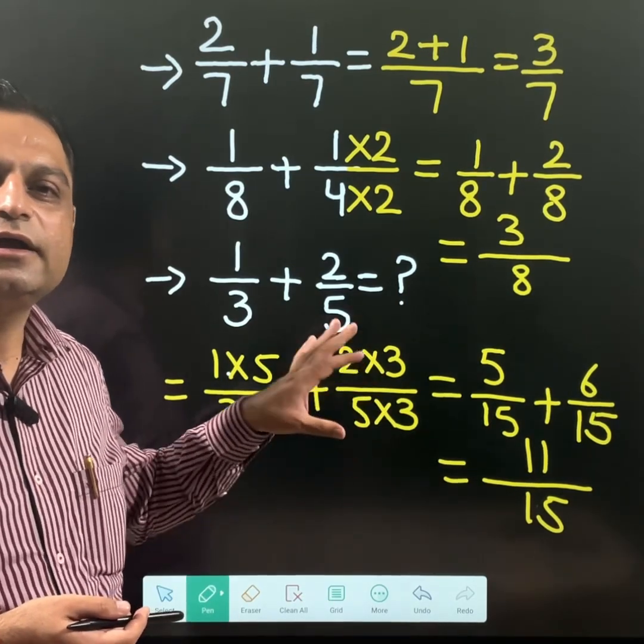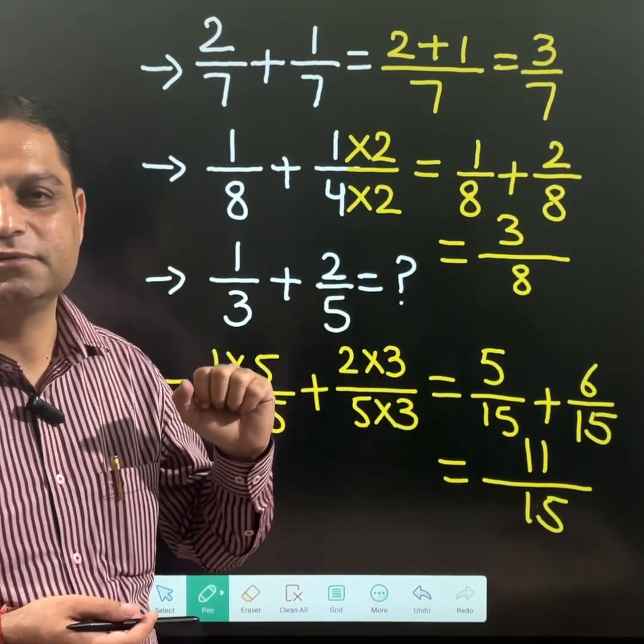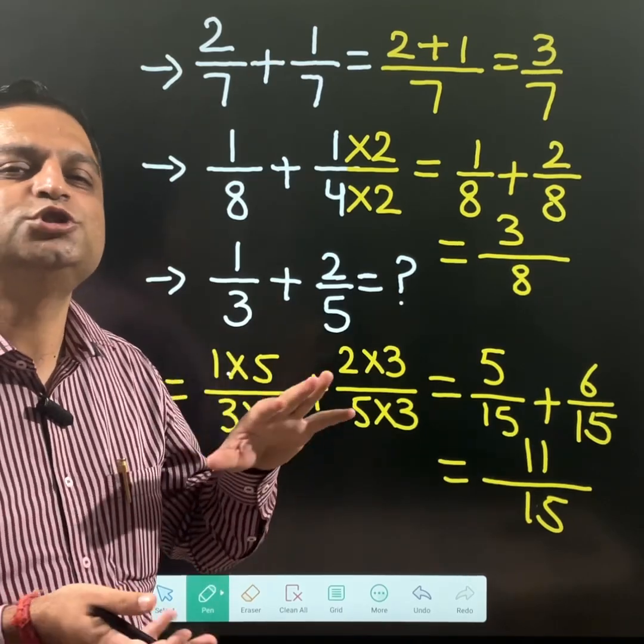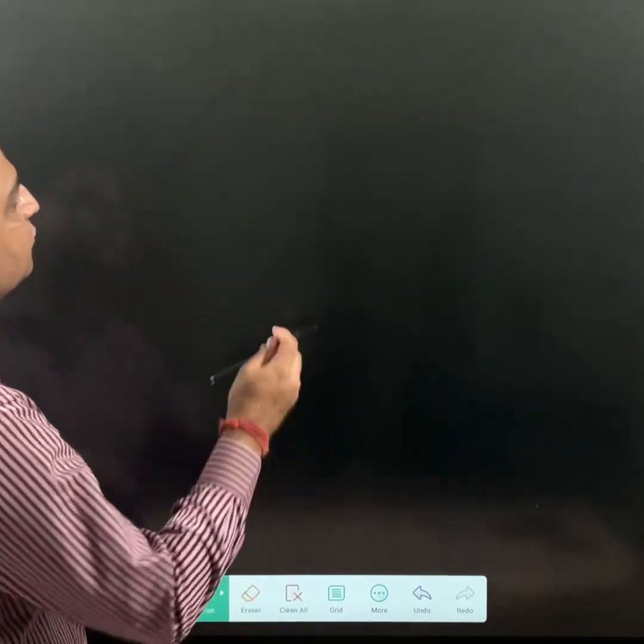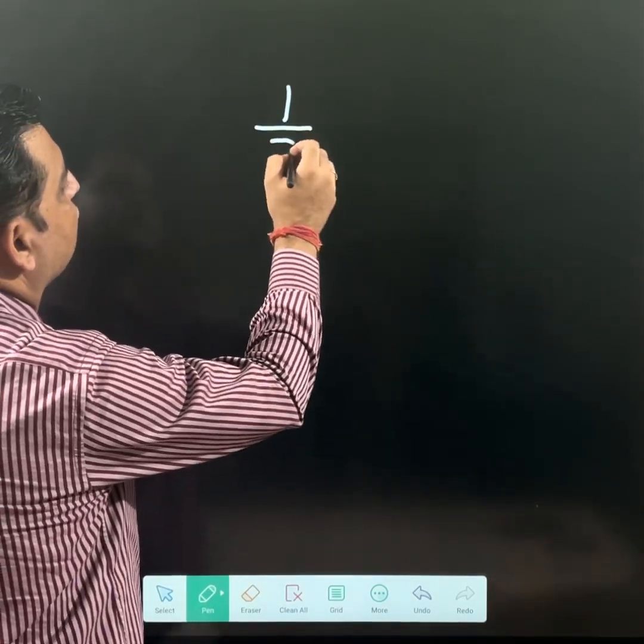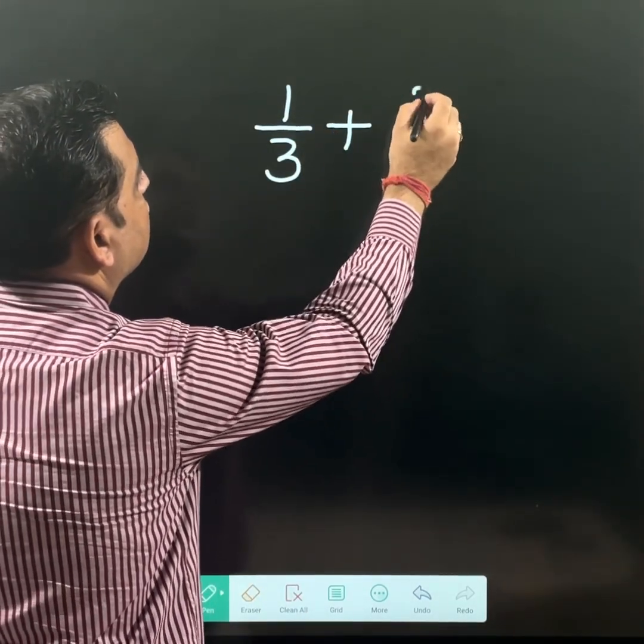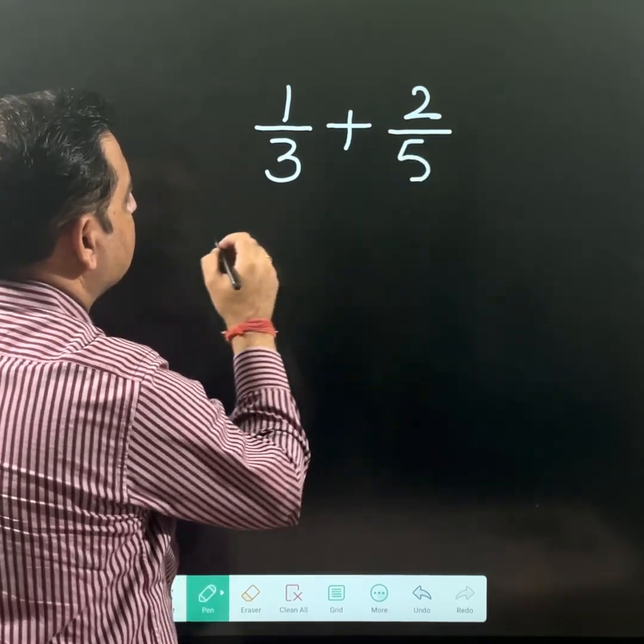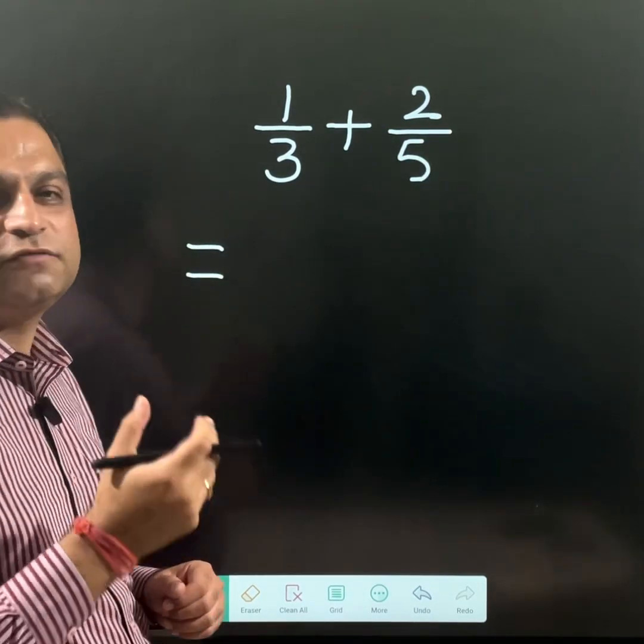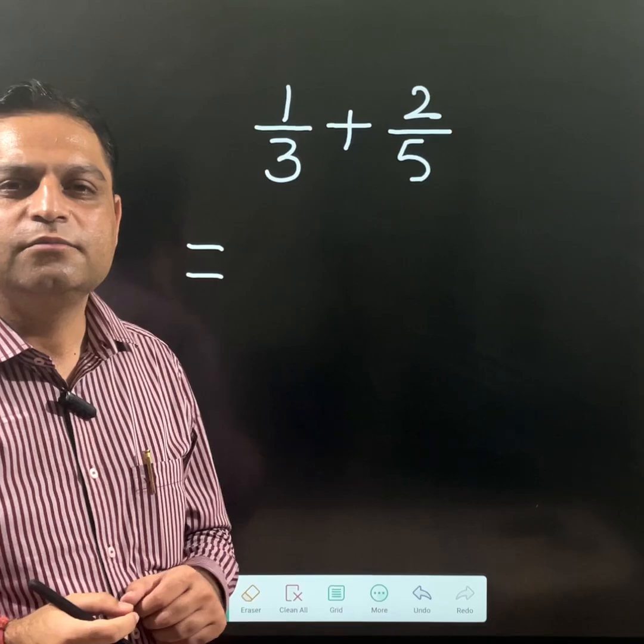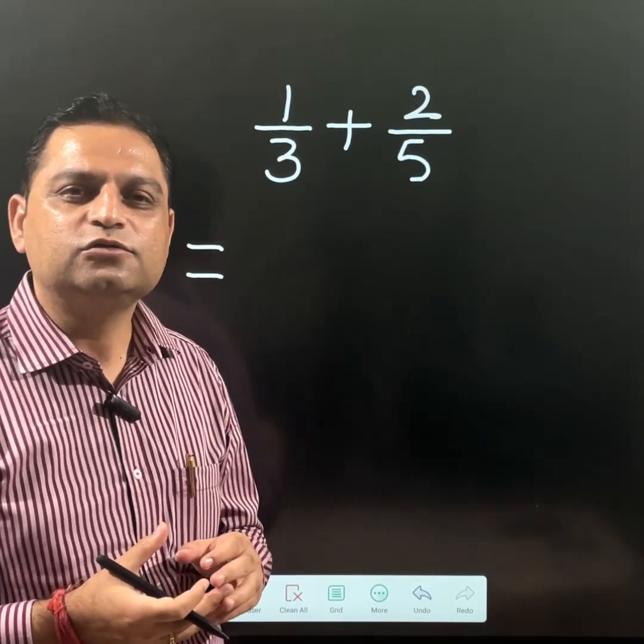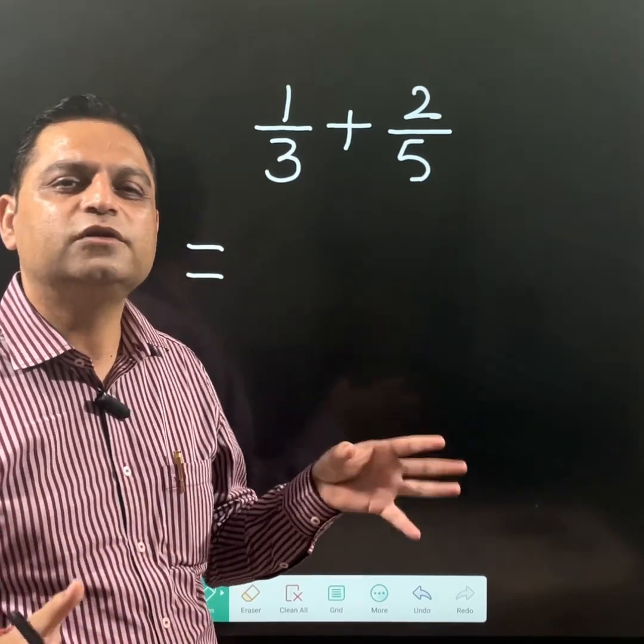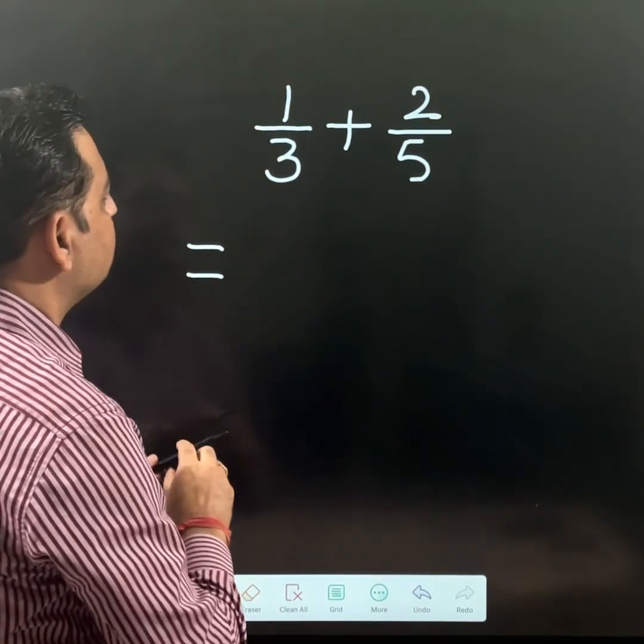But yes, there is a short way also. For example, this question 1 over 3 plus 2 over 5. There is a short method known as the butterfly method because a few students find it difficult to take the LCM and all. So for those students we usually give a simple trick.